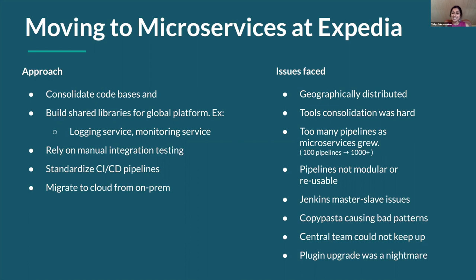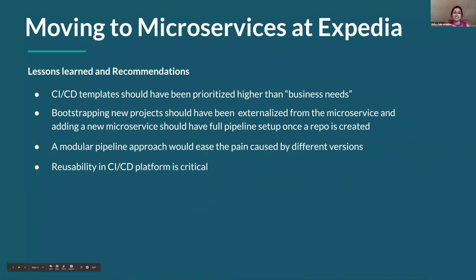The lessons learned made us realize that engineering teams building the microservices should have been able to prioritize CI/CD templating as a top business need. It's not separate from building your services — it doesn't belong in another organization. That was a very key lesson, because relying on a central team to bring all of that together for the rest of the organization was significantly slowing down the adoption and standardization of CI/CD.